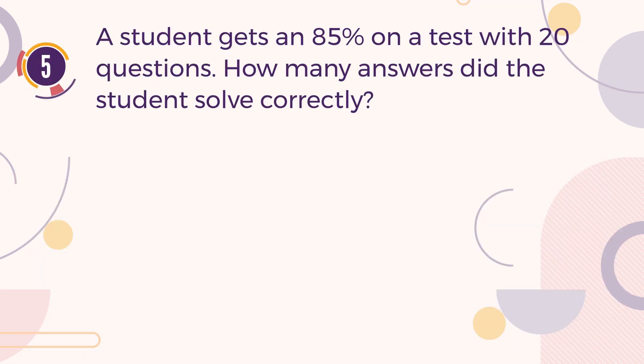Number 5. A student gets 85% on a test with 20 questions. How many answers did the student solve correctly? A. 15. B. 16. C. 17. D. 18.